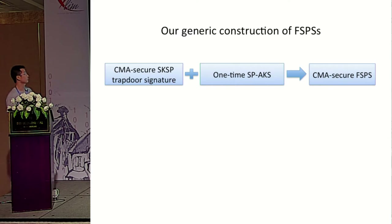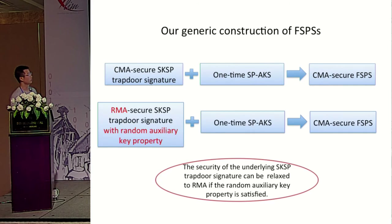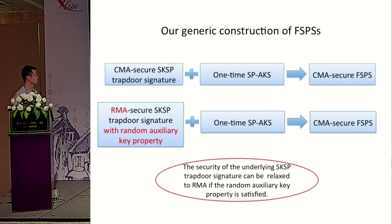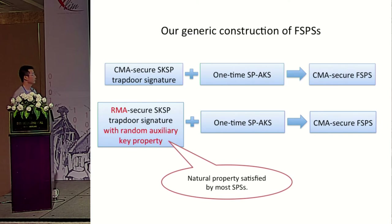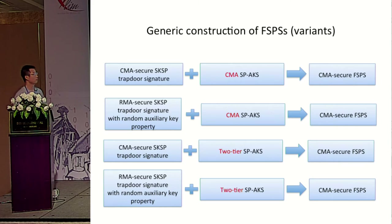Using the SKSP trapdoor signature scheme and SP AKS scheme, we obtain the FSPS scheme. We can relax the security of the trapdoor signature scheme to RMA security, as long as it satisfies a property called the random auxiliary key property. This property is very natural and satisfied by almost all SPS schemes. We can also replace the one-time secure AKS scheme with a CMA secure or two-tier AKS scheme, which may help achieve better efficiency.